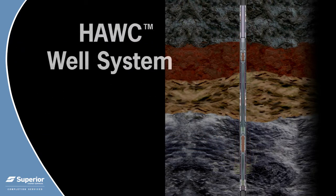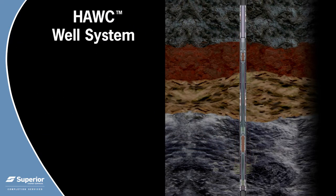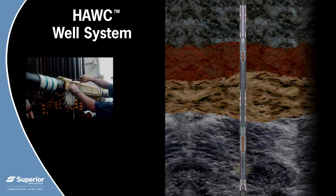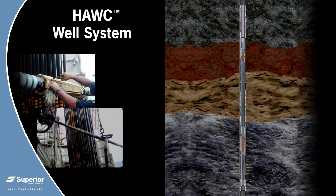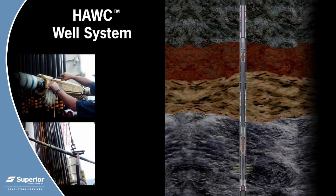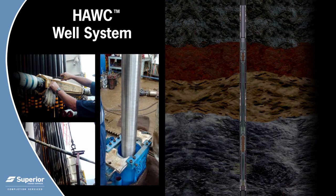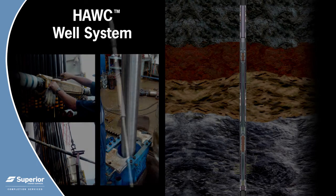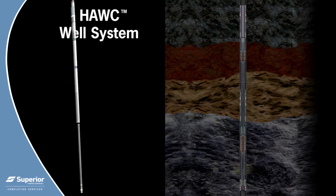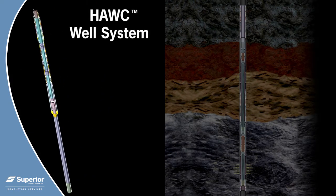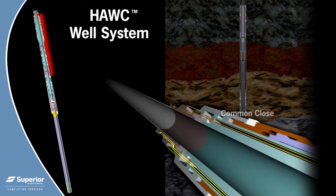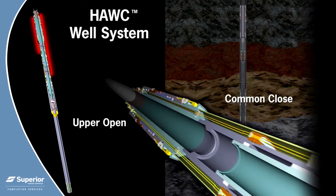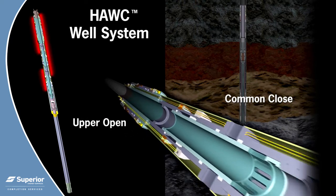The HAWC system is sent out as a fully tested assembly. Control and data acquisition lines are connected on the surface and the system is lowered into the wellbore. The hydraulic multi-service valve sleeves operate through three control lines: common close, upper open, and lower open.